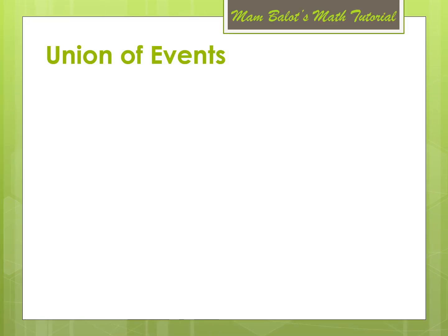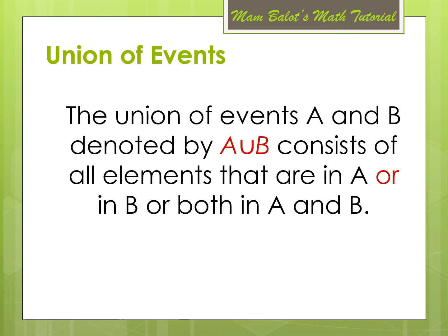What is the union of events? The union of events A and B, denoted by the symbol A∪B, consists of all elements that are in A, or in B, or both in A and B. Our keyword here is the word OR. So, if you find the word OR, it signifies that it is a union of events.